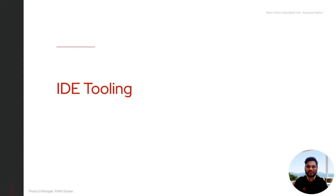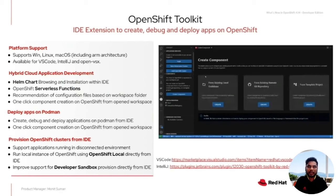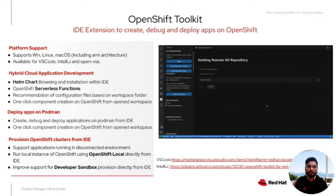Welcome to What's New in OpenShift 4.14 Developer Edition. I'm Mohat Suman, PM for IDE tooling. Today I'll take you through enhancements we made with respect to new features around multiple extensions we have for Visual Studio Code, IntelliJ, and Eclipse. Let's start with the OpenShift extension for VS Code and IntelliJ. We did tons of improvements — a lot of bug fixes, a lot of enhancements — and most importantly, we came up with multiple new workflows that allow developers to quickly get their apps running on OpenShift.